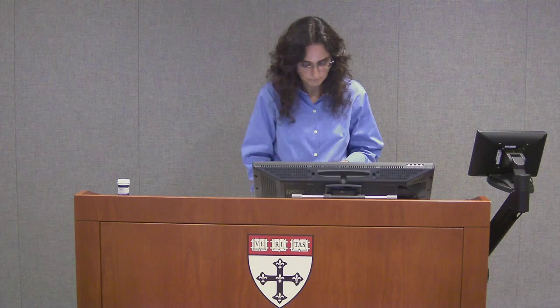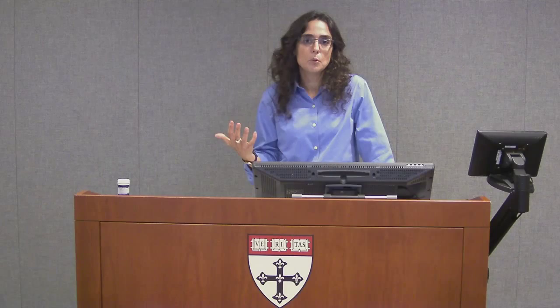Just to give a small flavor of the different applications using remote sensing in health: you have dengue, malaria, leishmaniasis, schistosomiasis, cholera, and several applications on air pollution and respiratory diseases. The applications are wide and becoming even more widespread because the price of acquiring imagery is really going down. The remaining questions are: what are the challenges we have to address when doing any kind of spatial analysis, and what tools are available for anyone to take their own data, merge it with something else, and do spatial analysis? That will be the topic of the third and last module.